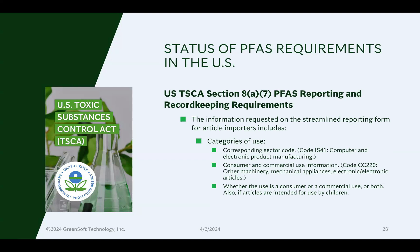There's other information to provide on the use of this PFAS, including the sector code — the sector of the industry your product is used in. For example, if you make a laptop computer, you would choose code IS41, which is computer and electronic product manufacturing. Additionally, you need to provide consumer and commercial use information — how is the end product going to be used? For a laptop computer, you would choose CC220, other machinery, mechanical appliances, and electronic and electrical articles.